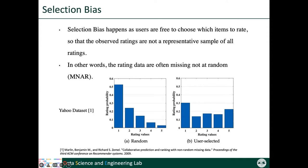Here are two figures showing the existence of selection bias in a real-world dataset. In the Yahoo dataset, researchers collected five-scale ratings users gave to music. Users were asked to rate music selected by themselves and also some randomly selected music. The two figures show the rating distribution on these two subsets. For randomly selected items, there are many low ratings, but for user-selected items, there are more highly rated items and fewer low-rated items. This means users choose more items they like to rate — so their selection is biased.